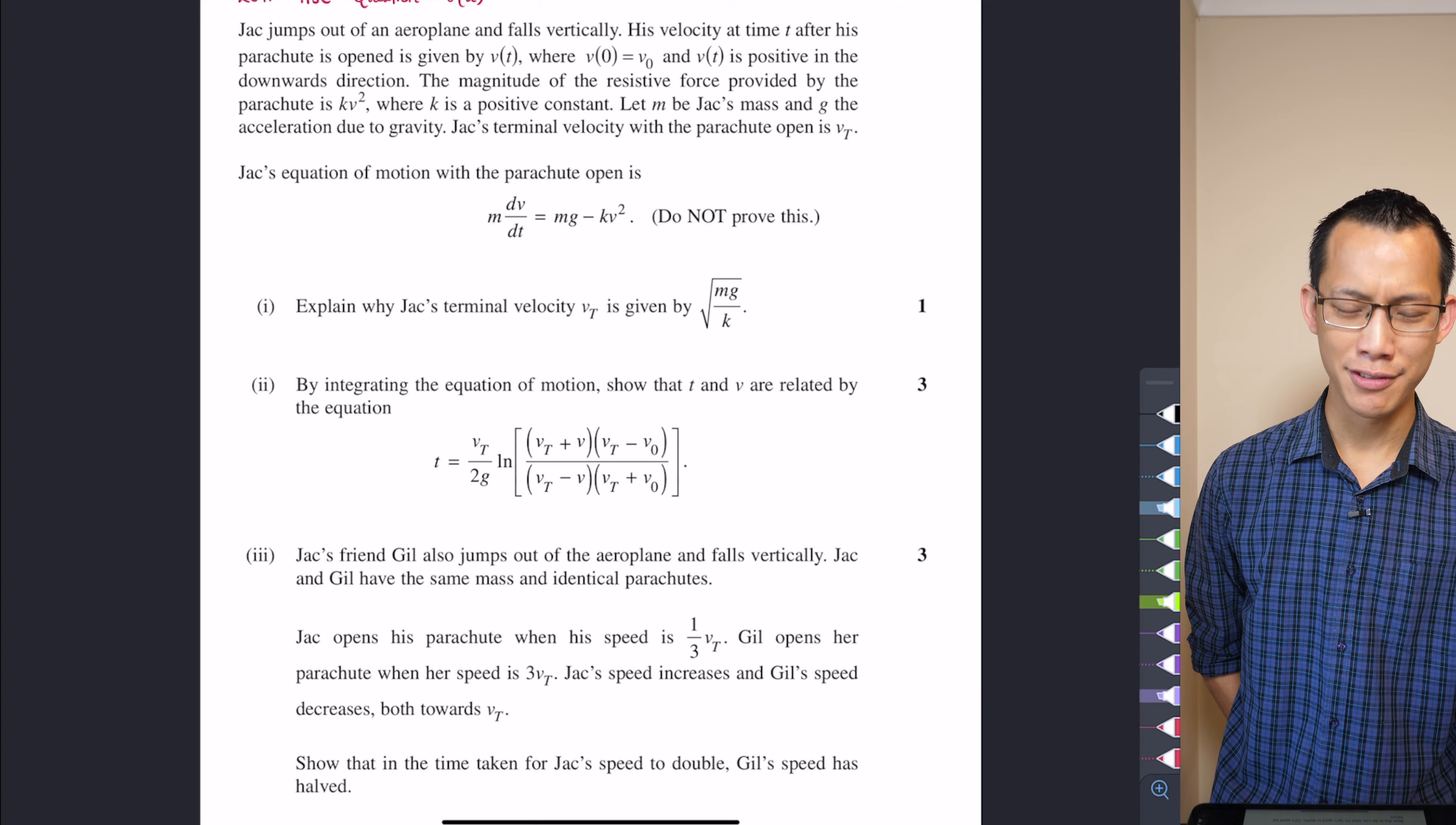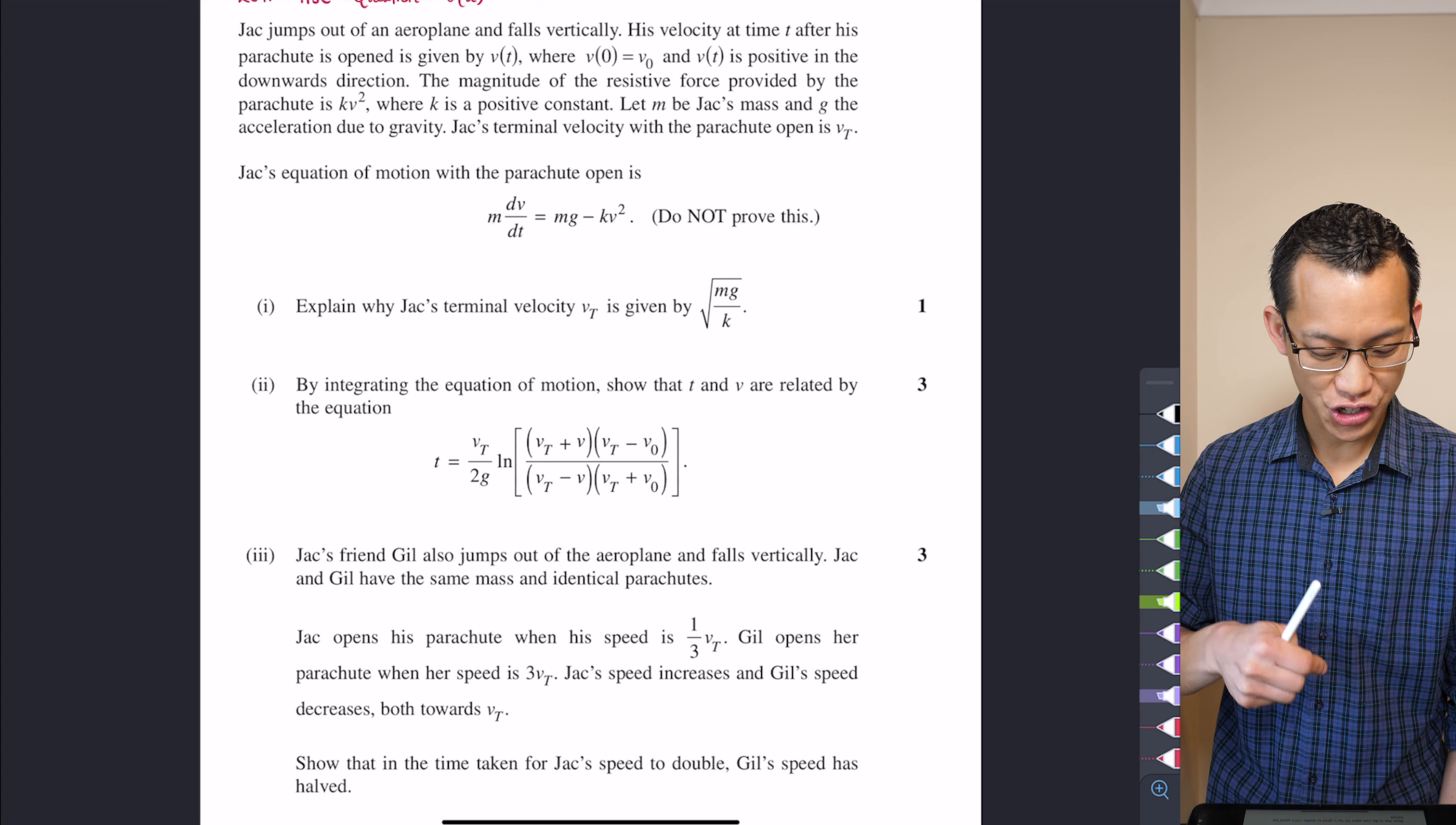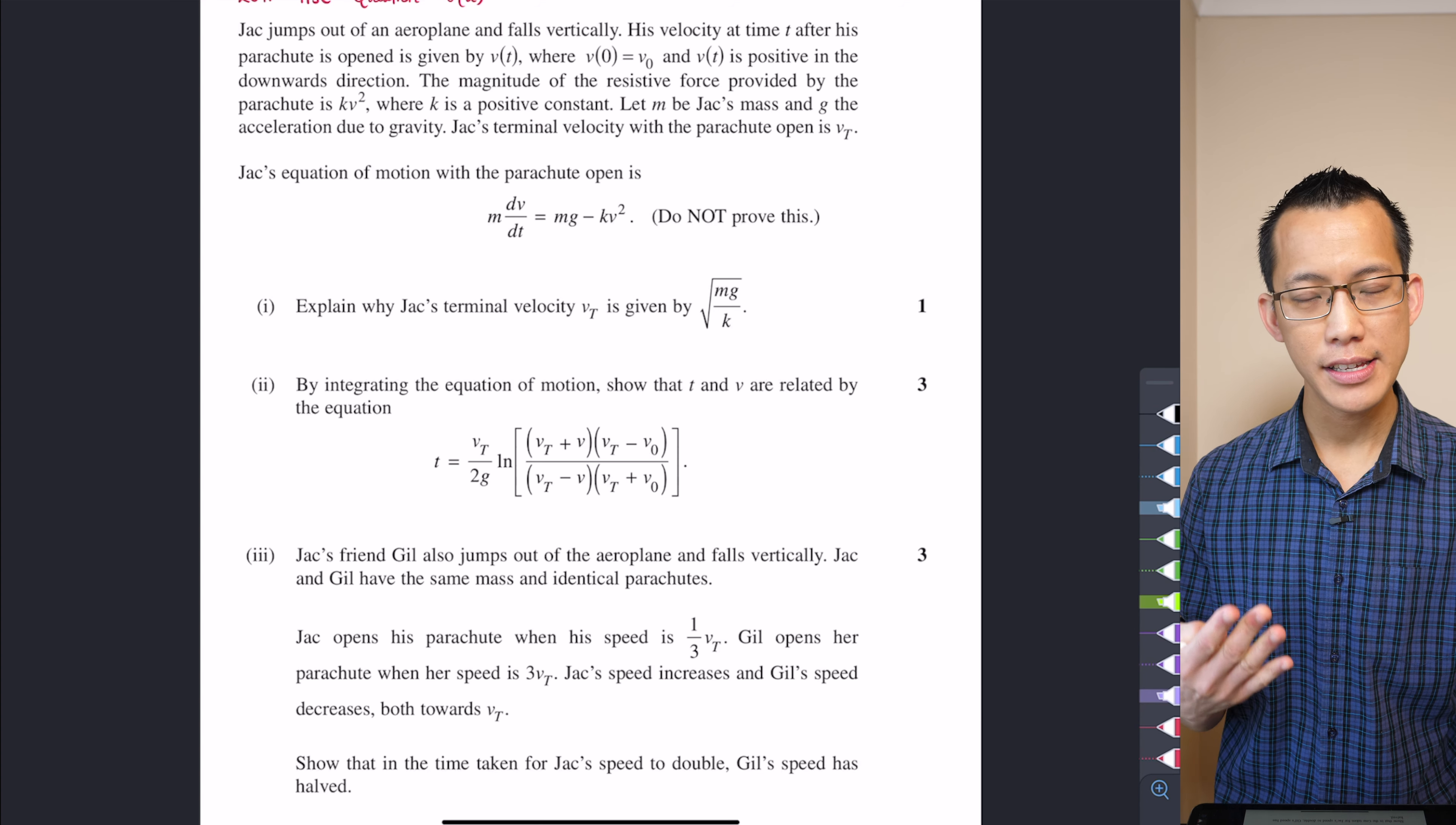You've got two people who are jumping out of an airplane with parachutes. Thankfully, you've got Jack and Jill. See what they did there. You only get introduced to Jack in the beginning. Jill comes in part three.